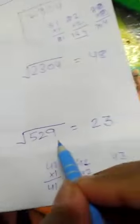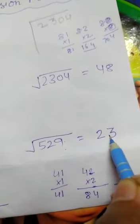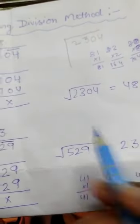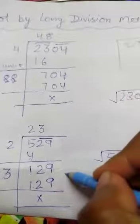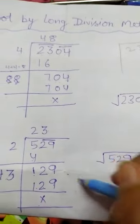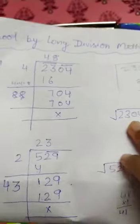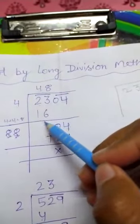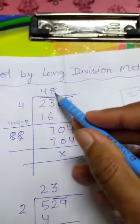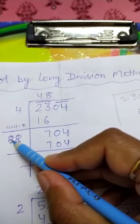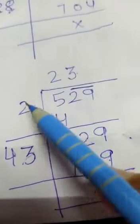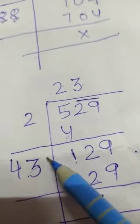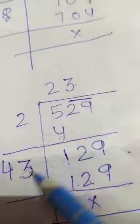43×3=129, and we get the square root of 529 equals 23. Remember the method: write the square number, then write the same digit again. We add the digit — not multiply — to get the new divisor. For example, 2×2=4, 2+2=4, and then find the next same digit.